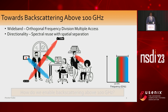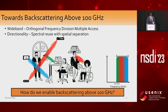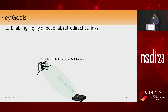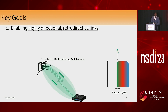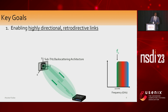One question is how do we enable this and make it actually efficient? We established a few key goals. First, we want these communications to be highly directional, specifically retroactive — meaning the backscatter signal is transmitted back in the direction of the source. This is crucial because at these high frequencies we already see significant path loss. But because the backscatter architecture doesn't actually amplify or regenerate the signal, we need to minimize total path loss as much as possible by directing it back passively.